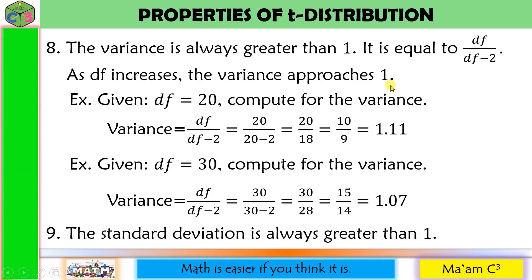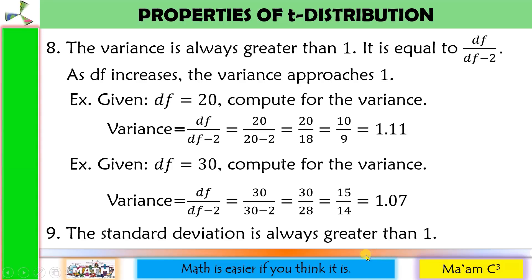The last property: the standard deviation is always greater than one. In normal distribution, the standard deviation is equal to one.